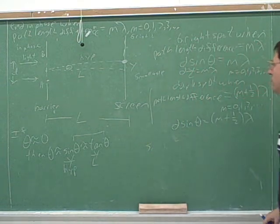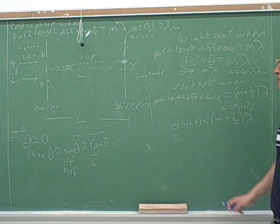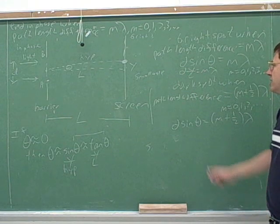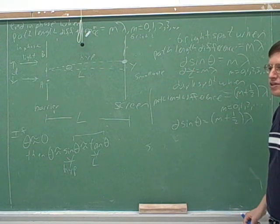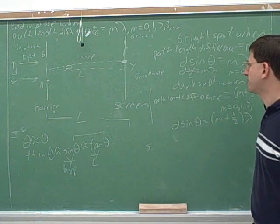So here's a new formula for the bright spots. Now the bright spots are D times Y over L equals M lambda. And Y over L is just the sine of theta term. So that's just using our small angle approximation.